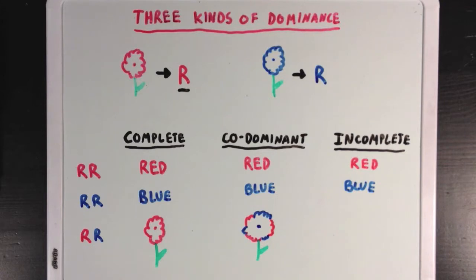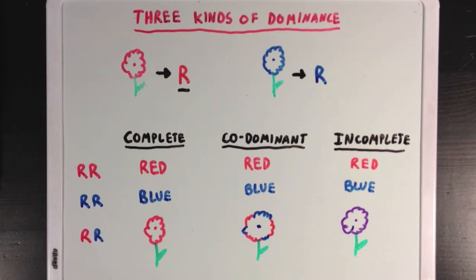Incomplete dominance is when the heterozygous phenotype shows a mixture of the two alleles. In this case, the red and blue flower petals may combine to form a purple flower. Neither allele is completely dominant over the other; instead, the two, being incompletely dominant, mix together.